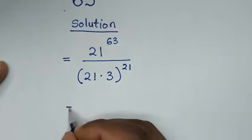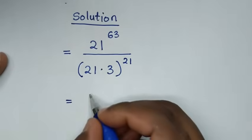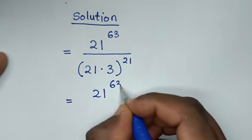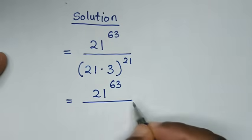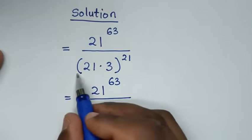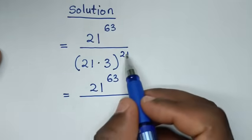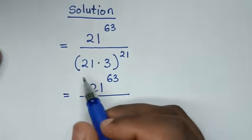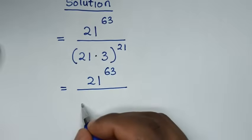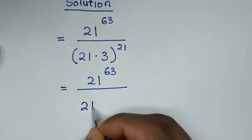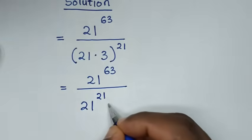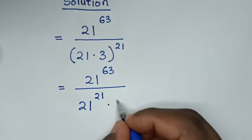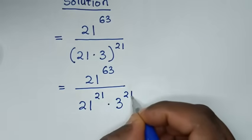So it will be equal to 21 power of 63, then over — into the base, we'll take the power of 21 into each factor of the base, so it will be 21 power of 21 times 3 power of 21.